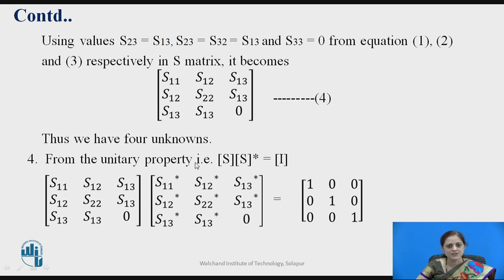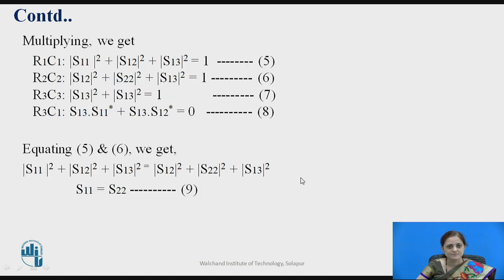The next step uses the unitary property: the scattering matrix multiplied with the complex conjugate of the scattering matrix equals the identity matrix. Defining this scattering matrix as shown, and taking each element — multiplying row by column — we get R1 multiplied with C1, giving the equation: S11² + S12² + S13² = 1.